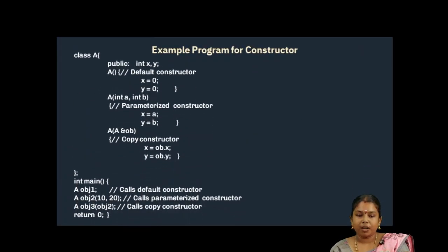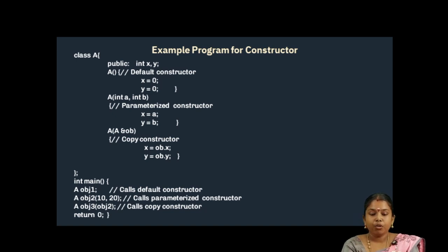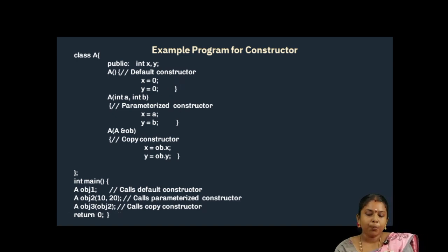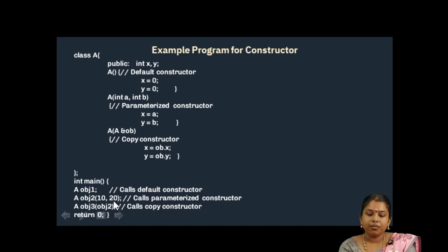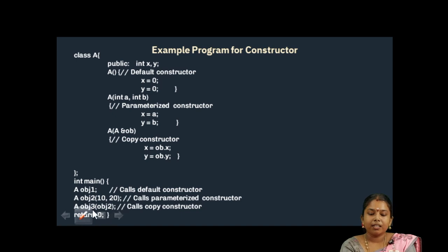Now let's see a simple example for Constructor. Here we define three types of Constructors. The first one is the Default Constructor — it will be automatically invoked when we create the OBJ1 object because it contains no parameters. During this creation, the Default Constructor is automatically invoked and initializes the X and Y values as 0. Then during OBJ2 object creation, it contains two parameters — 10 and 20 — so the Parameterized Constructor will be invoked and initialize X as 10 and Y as 20. Then this is a Copy Constructor, and as stated earlier, it contains an object as its parameter.